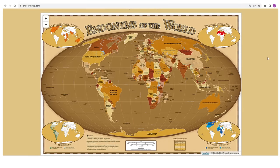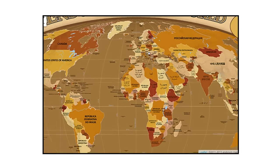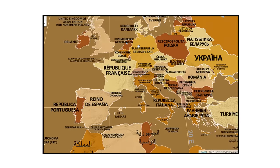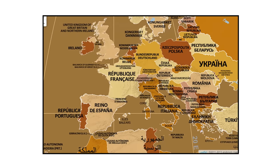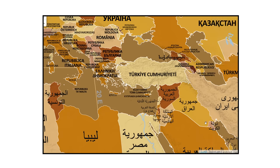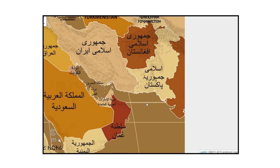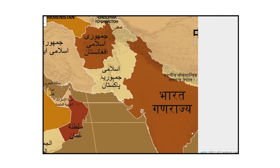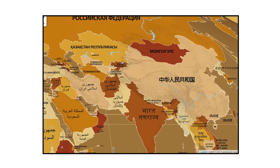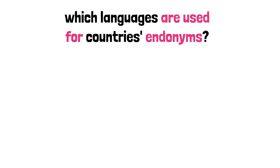There is a really cool website that summarizes this whole topic: endonymmap.com. All credit to them for going through the effort of making this. In it, we can take a look at a really cool map which identifies each country with the name it calls itself — its endonym. However, some are not understandable to someone from Europe or America, unless you happen to speak Arabic, Russian, or some of the many Asian languages, which brings about another interesting aspect of this topic: which languages are used for countries' endonyms?